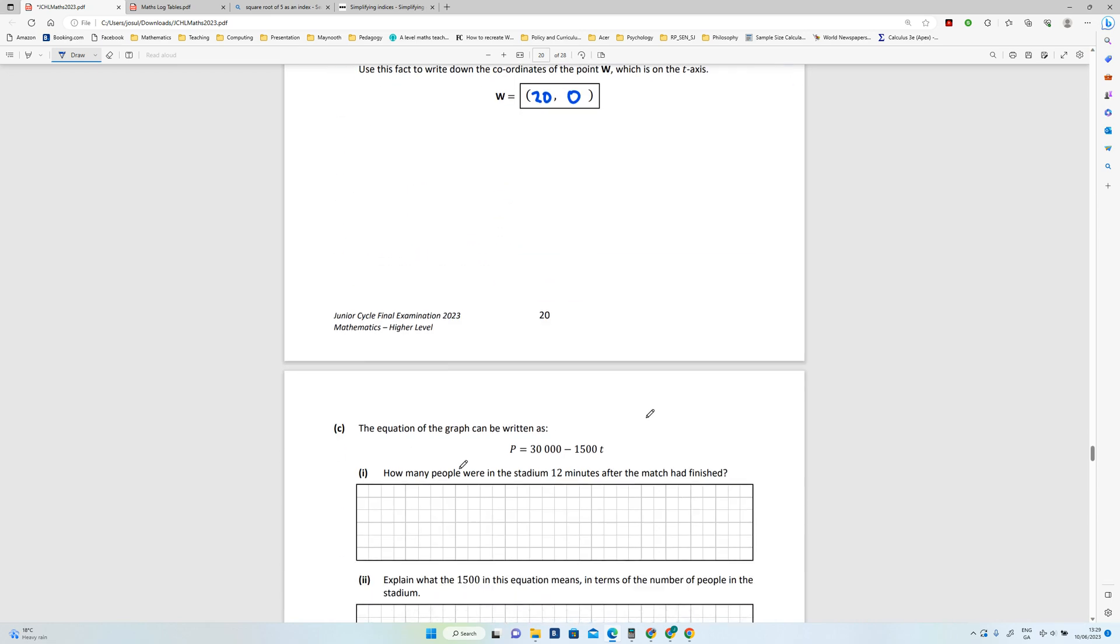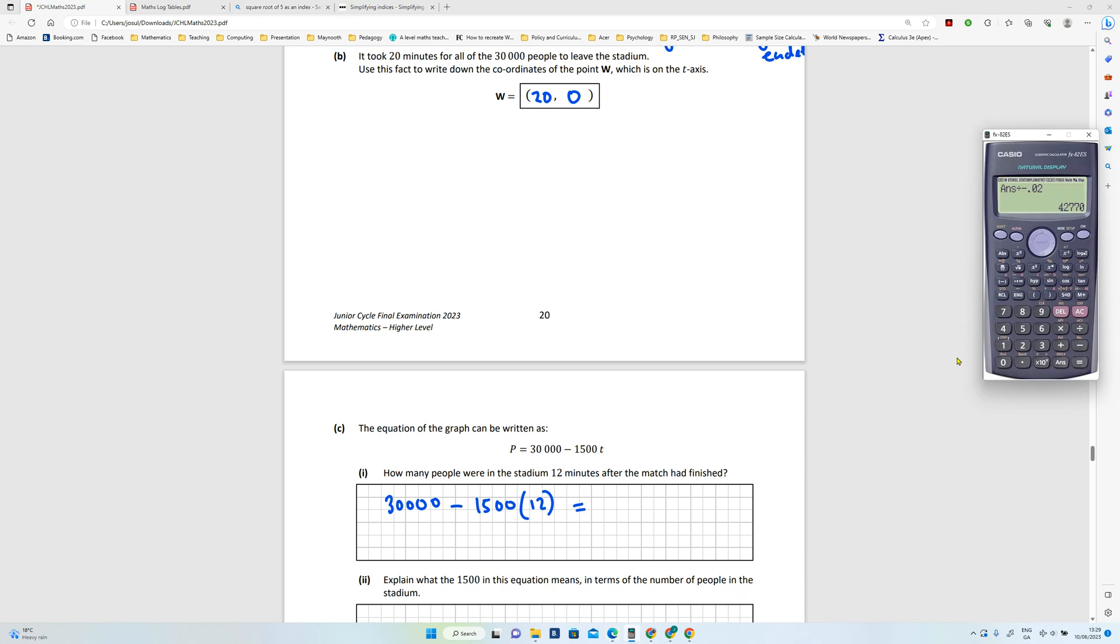And the equation of the graph can be written as this. How many people were in the stadium 12 minutes after the game? Okay, so it's going to be 30,000 minus 1,500 times 12. We can crank that into the calculator.